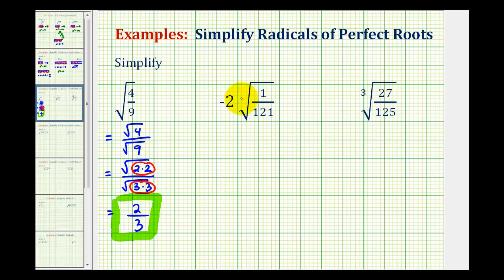Next, we have negative 2 times the square root of 1 over 121. So we'll write negative 2 as negative 2 over 1 times, and this is going to be equal to the square root of 1 over the square root of 121. And again, because 1 and 121 are perfect squares, this will simplify perfectly.